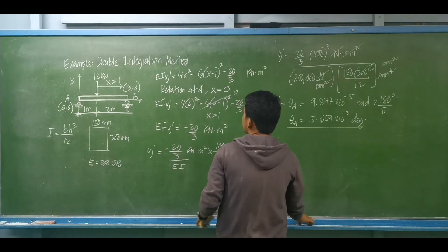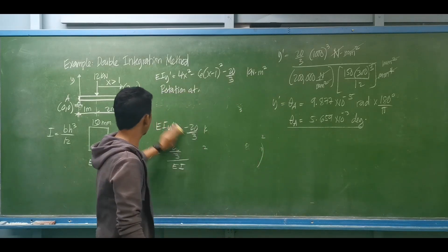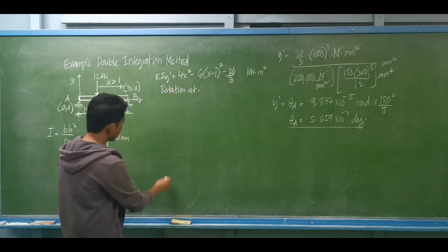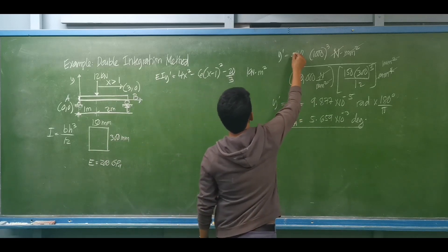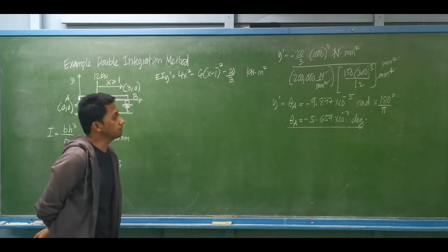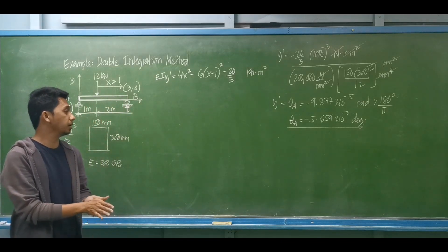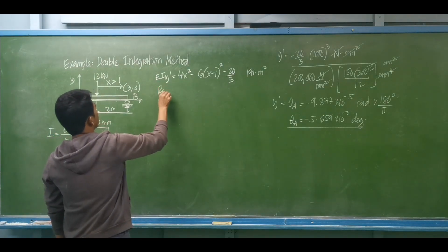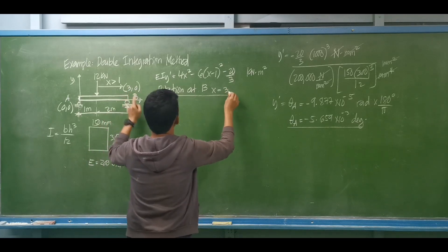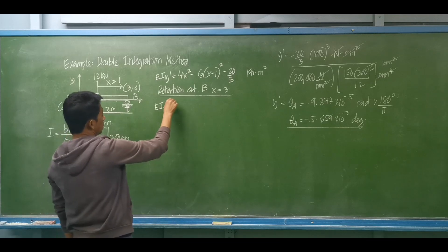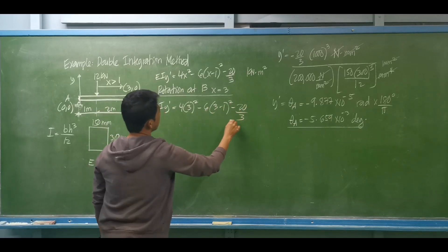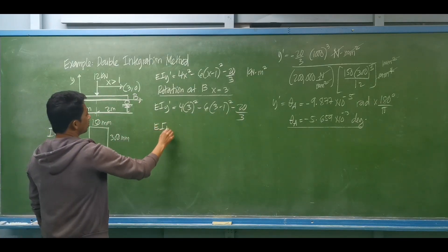To determine the rotation at B, use x equals 3 meters in the slope equation. EI y prime equals 4(3)² minus 6(3 minus 1)² minus 20/3. Since x equals 3 is greater than 1, the second term is included. Computing gives EI y prime equal to positive 16/3 kilonewton·meter squared.